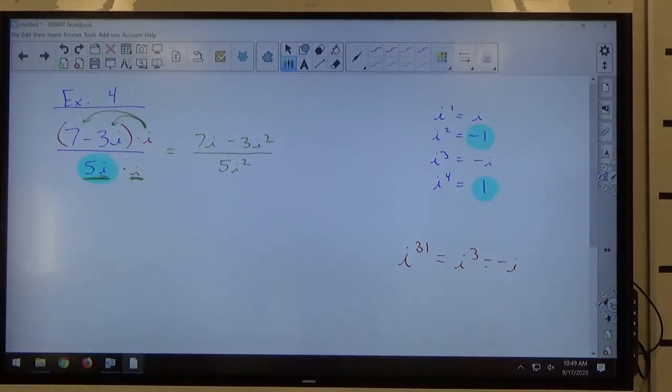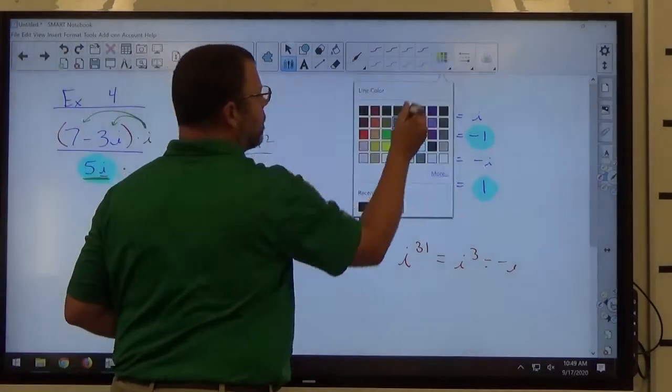Again, my goal at that moment in time was I want the denominator to be i squared, because i squared is a real number, and I want the denominator to be real. So once I've done that step, now it's a matter of simplifying.